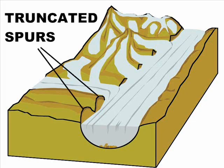Truncated Spurs. A glacier will cut away layers of rock and surface soil as it moves downhill. Truncated spurs can be seen where hillsides are bisected by the glacier.